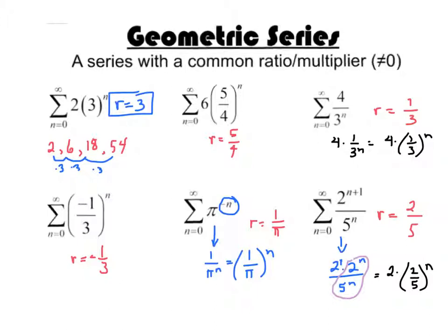For a geometric series, what we're looking for is that some number is being raised to the nth power. We'll put a sigma out in front, but that's what we're looking for. It could be multiplied by another number like 2 or 6, and we might have to do a little algebra to get it in the form we like.